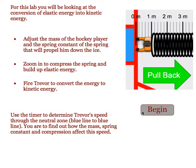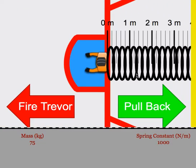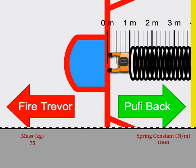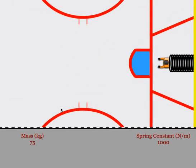This simulation is used to look at the relationships that exist when we convert elastic energy into kinetic energy. Students begin this program with a hockey player in the crease up against the spring, which is attached to the boards. They hit the set Trevor function and then they can pull the hockey player back to different distances, and once they have him in the position they want, they can fire him down the ice.